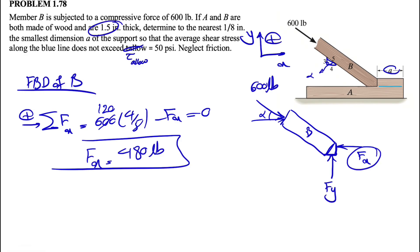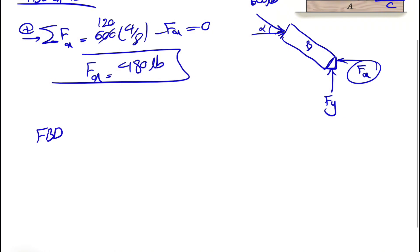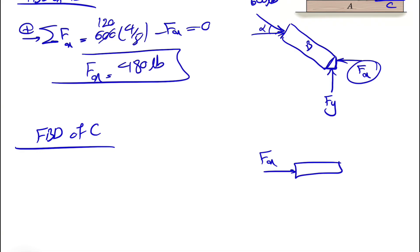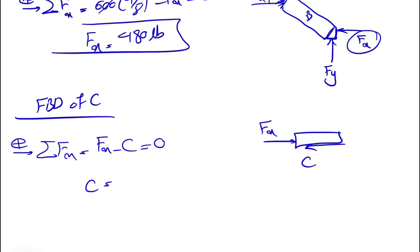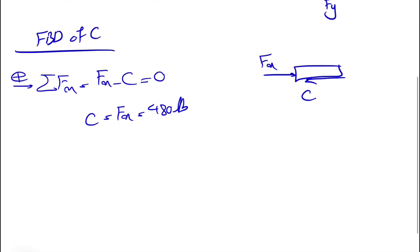We can also do the sum of forces in the Y direction to find FY, but FY is not what we're interested in here. Moving on to the free body diagram of the support part — let's call it C or D — we have FX acting in the opposite direction by Newton's law, and a force C that is causing the shear. Summing forces in X: FX minus C equals 0, so C equals FX, which is 480 pounds.